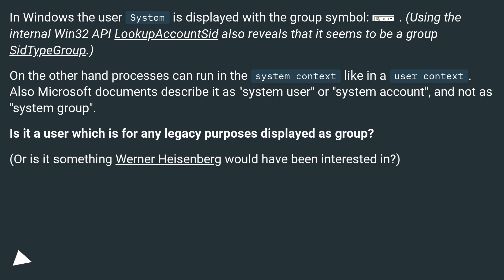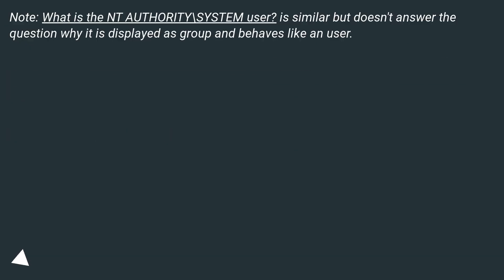Or is it something Werner Heisenberg would have been interested in? Note: the question 'What is the NT Authority\system user?' is similar but doesn't answer why it is displayed as a group yet behaves like a user.